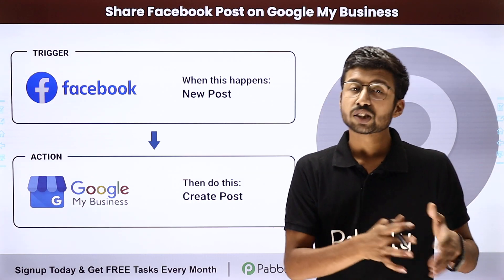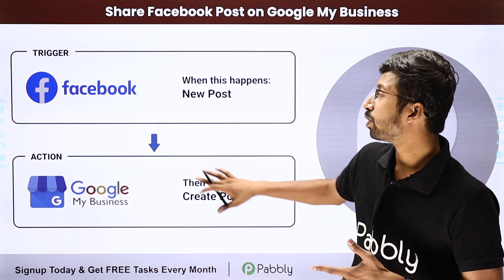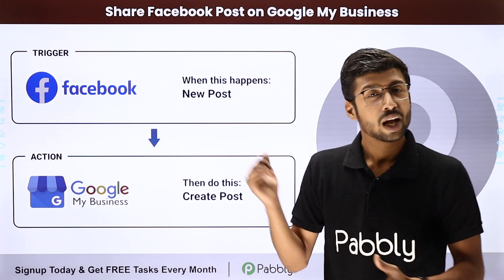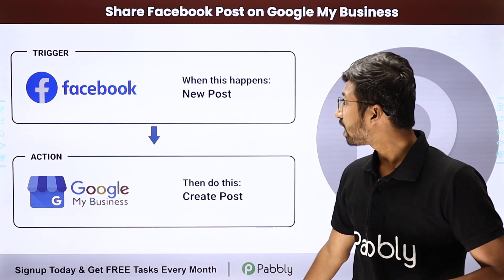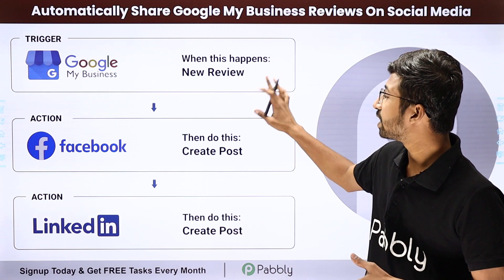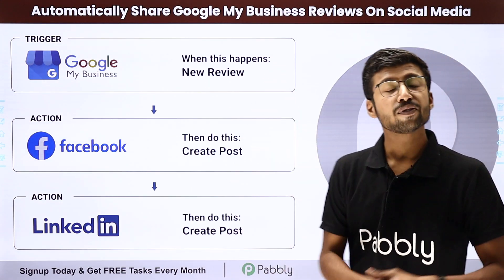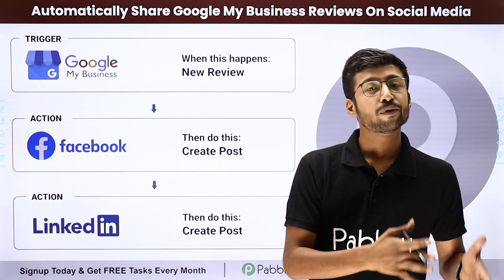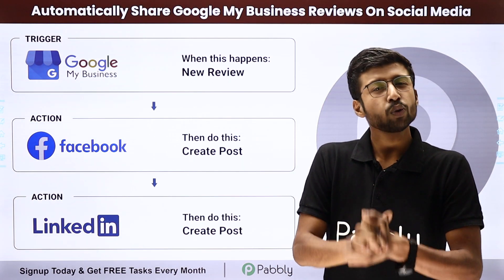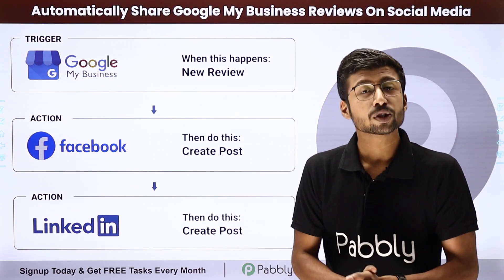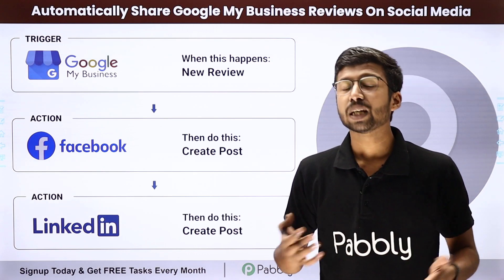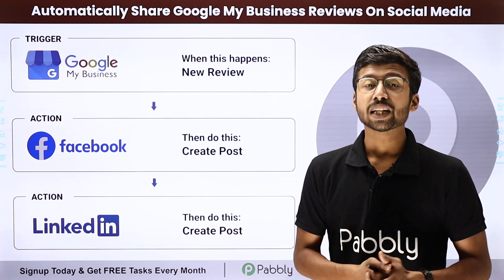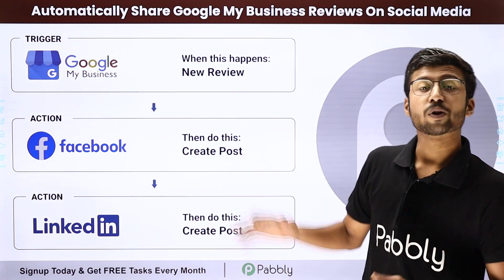And not just Facebook — instead of Facebook you can use this automation for Instagram, Twitter, or other social media applications as well. Moving ahead to our fourth automation idea: automatically sharing our Google Map Business reviews on social media platforms. Suppose you keep getting four-star and five-star reviews and you want to share those customer reviews on your social media platforms like Facebook, LinkedIn, Twitter, and Instagram — you can automate this complete process.